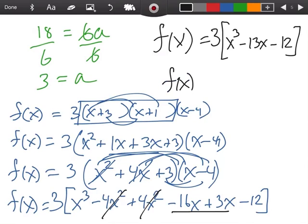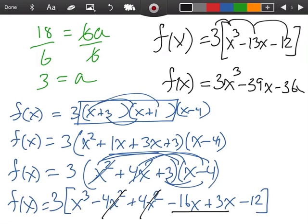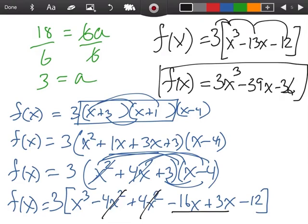Okay. Actually, I don't think I need to go to another page, because now all I'm going to do is multiply by 3. So I'm going to end up with 3x to the third minus 39x minus 36. And here is my equation, my function.